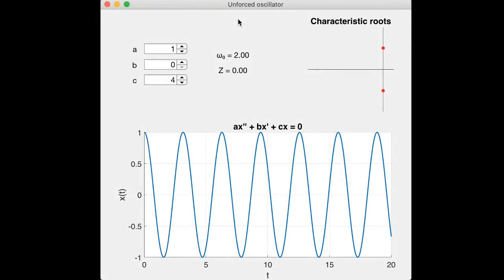Here's a graphical demonstration of what can go on in the unforced oscillator. Here's our linear oscillator equation with the three coefficients a, b, and c that I can change over here. In response, we can calculate the natural frequency and damping coefficient, and we can see the characteristic roots or eigenvalues in the complex plane. Then we get a plot of the solution for particular initial conditions. Initially I've got the damping coefficient b turned off completely, so Z is 0. That means the characteristic roots are purely imaginary, ±i times the natural frequency, which is 2 here. This solution would be cos(2t).